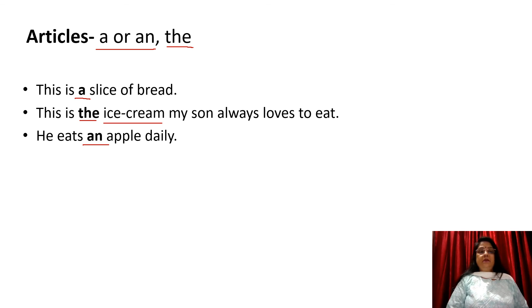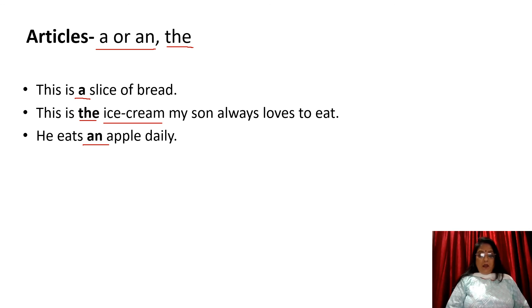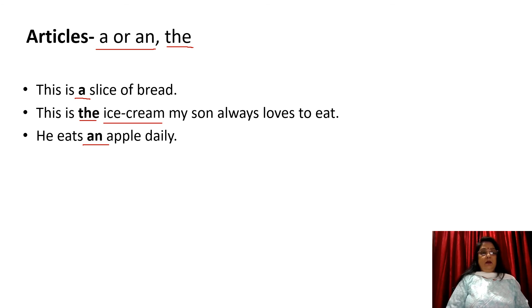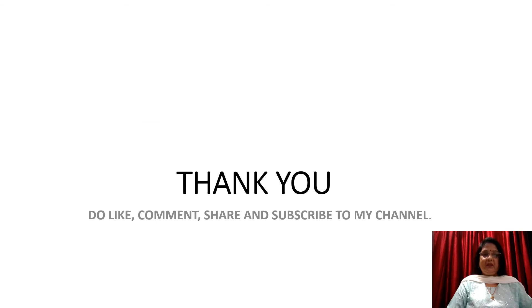Let's revise. Today we have learned that determinants are of four types: demonstrative, possessive, quantifiers, and articles. We have also learned their uses. I hope you liked it. Do watch the links given in the description box. Thanks for watching — see you in the next video.